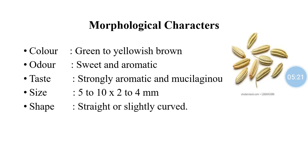For morphological or organoleptic characters, crude drugs can be identified by studying color, odor, taste, size, and shape. For fennel: the color is greenish to yellowish brown; the odor is sweet and aromatic; the taste is strongly aromatic and mucilaginous; the size is 5–10 mm × 2–4 mm in width; and the shape is straight or slightly curved.